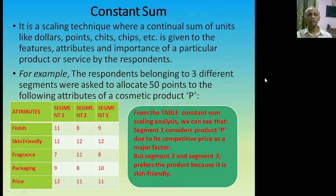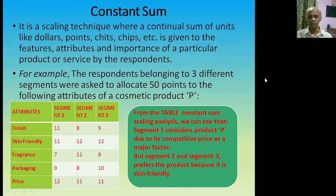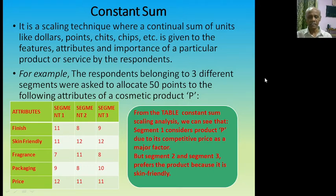The next one is constant sum scaling. It is a scaling technique where a continuous sum of units like dollars, points, chips, etc. is allocated to the features, attributes, and importance of a particular product or service by the respondents. In research, most of the time we use this constant sum. For example, respondents belonging to three different segments were asked to allocate 50 points to the following attributes of a cosmetic product.